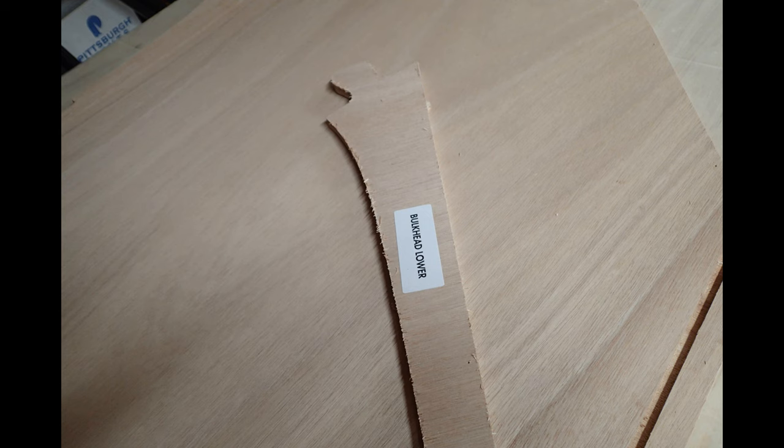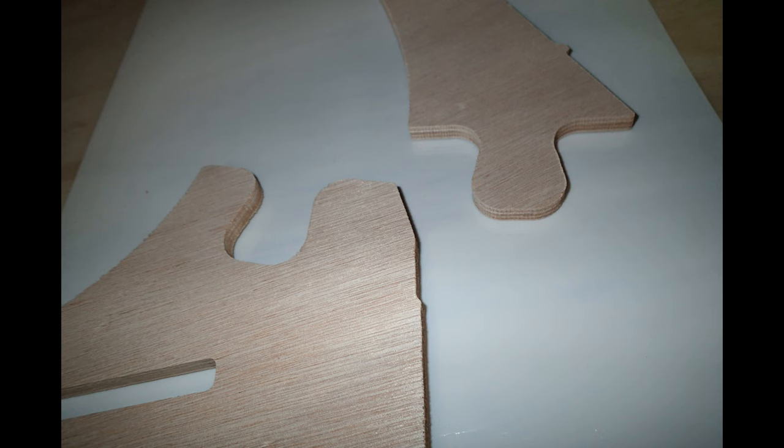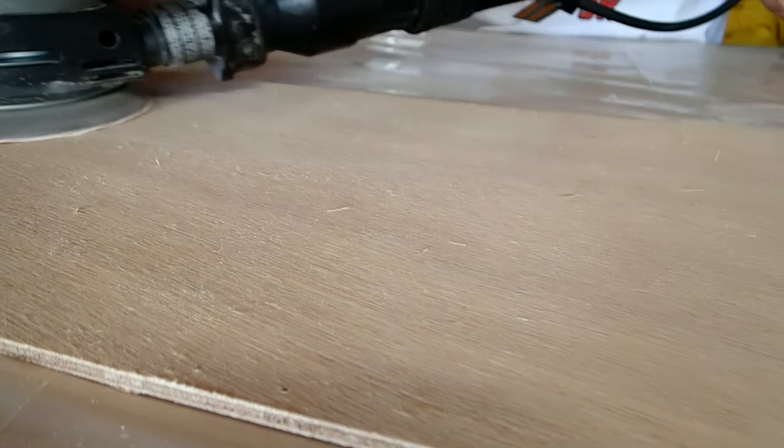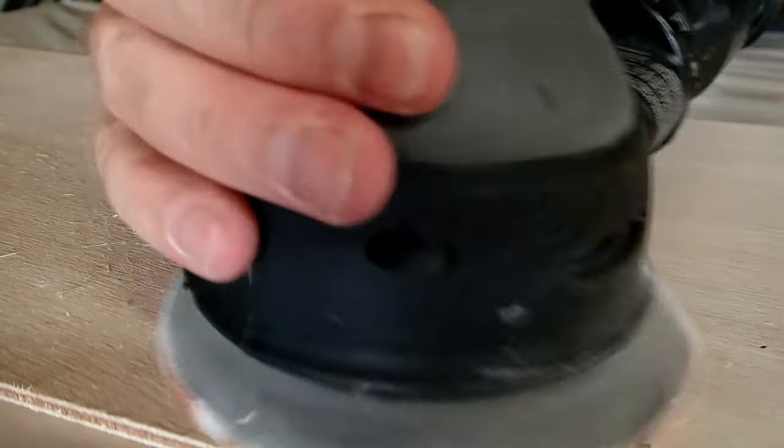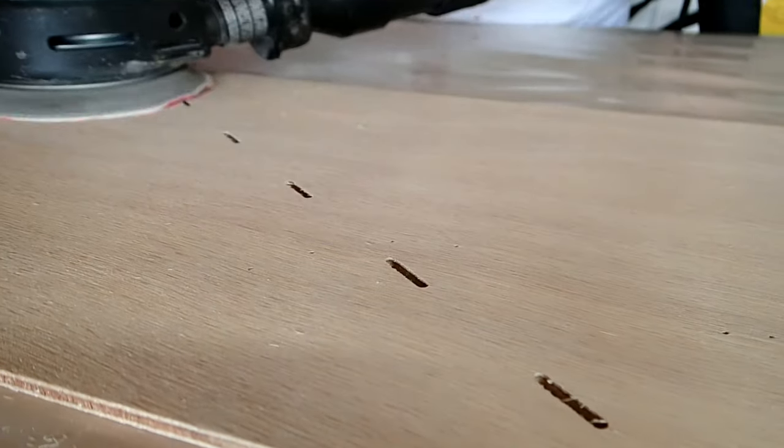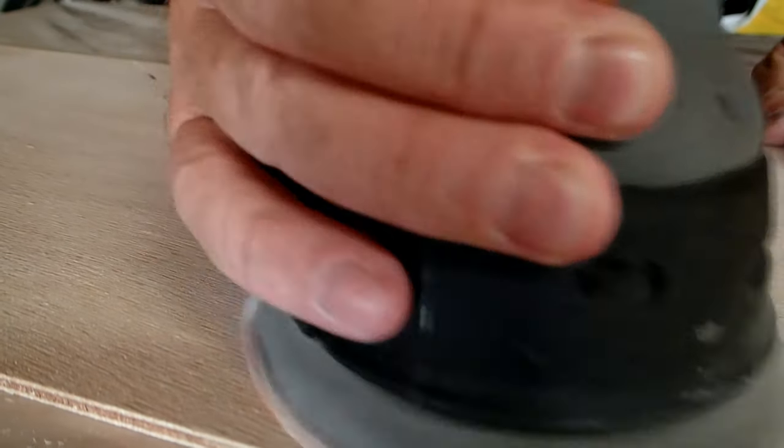Before you epoxy the panels together, you need to prepare the wood. First, you must sand it. This is the last time it will be flat and easy to sand, so take the opportunity now to knock off the roughness left by the plywood manufacturer and the CNC machine and clean up any residue from the stickers.